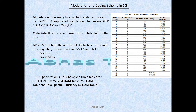So what is modulation? Modulation is how many bits you can transfer per symbol — here symbol refers to a resource element. The supported modulation schemes are QPSK, 16QAM, 64QAM, and 256QAM. 2 bits are transferred in QPSK, 4 bits in 16QAM, 8 bits in 64QAM, and so on. The formula is 2 raised to the power of n.